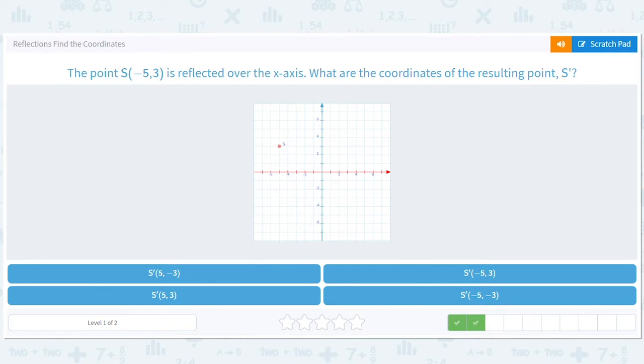Again we have another x-axis reflection. Reflecting across the x, so we flip the y and it gives us (-5, -3). Leave the x the same, make the y opposite.